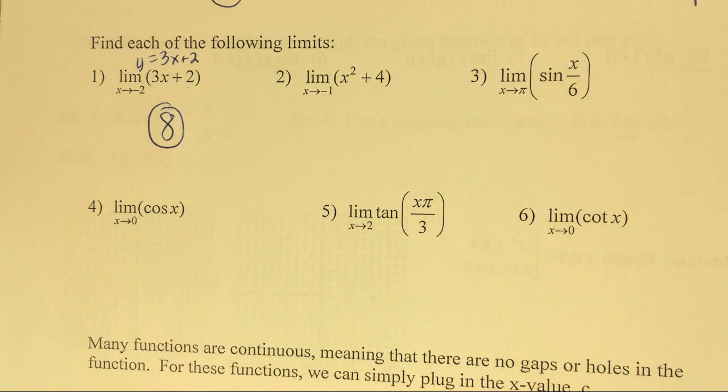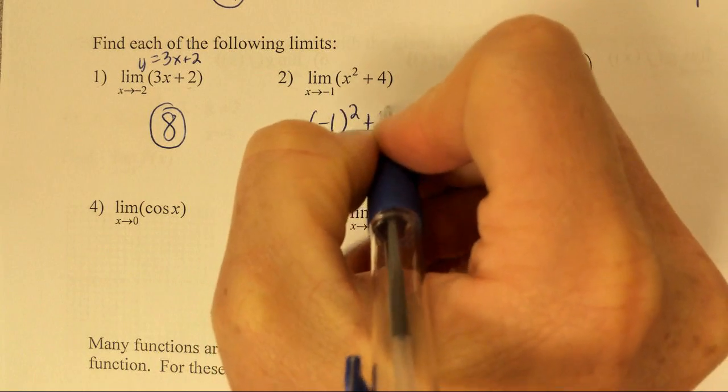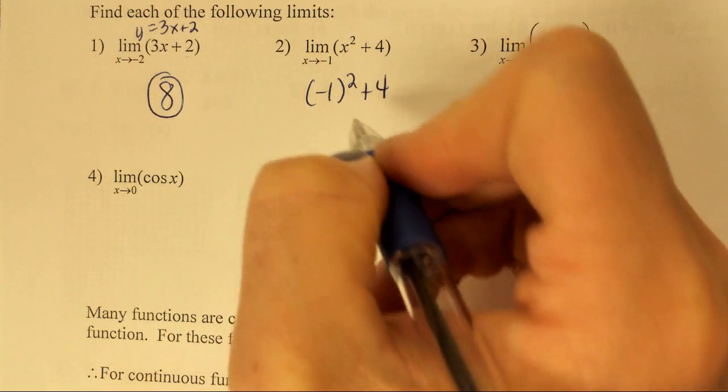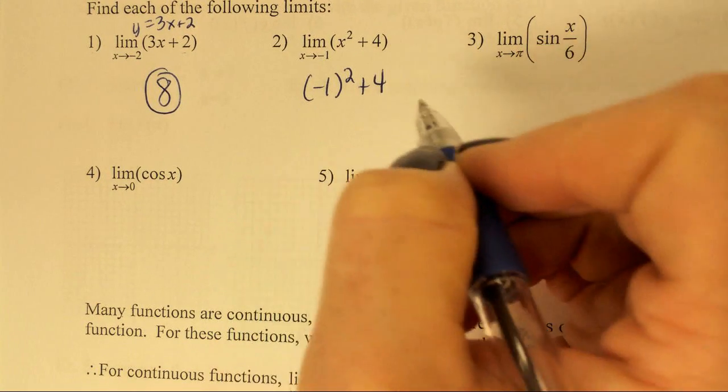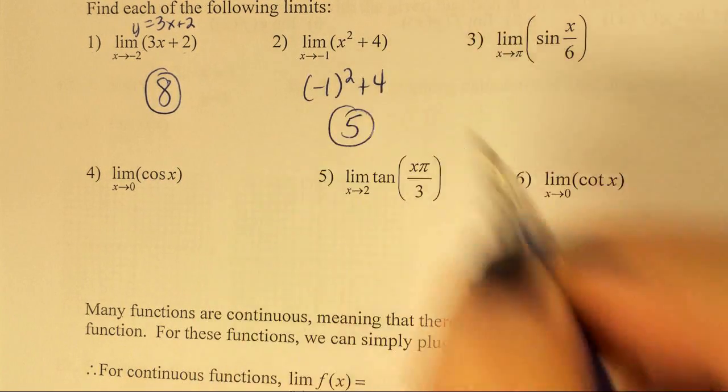Same thing on the next one. Just plug in your negative 1. Peter, what do we get? All right, so that limit is going to be 5.